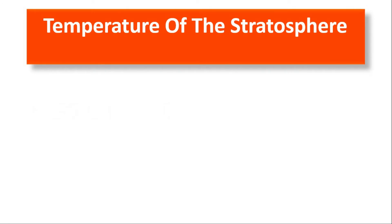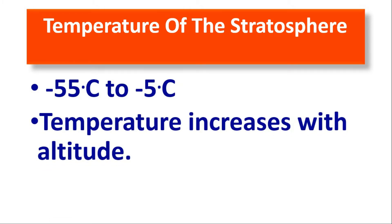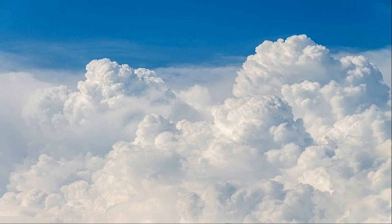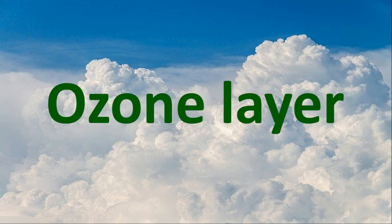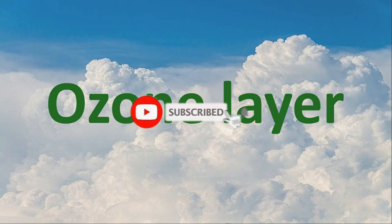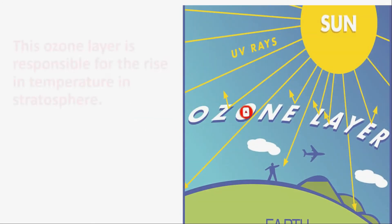The temperature of the stratosphere ranges from minus 55 to minus 5 degrees Celsius, which shows that temperature increases with altitude. The reason behind this is the ozone layer — due to the ozone layer, the temperature of the stratosphere increases.